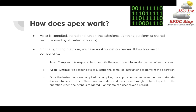Once the instructions are compiled by the compiler, the application server saves them as metadata. It also retrieves the instructions from the metadata and passes them through runtime to perform the operation when the event is triggered. To make this more clear, let's move on to the official documentation.